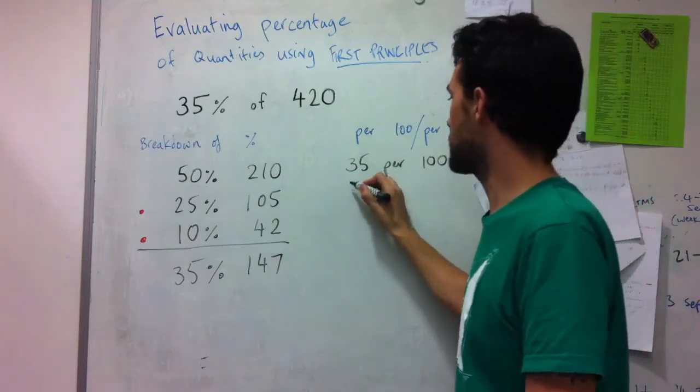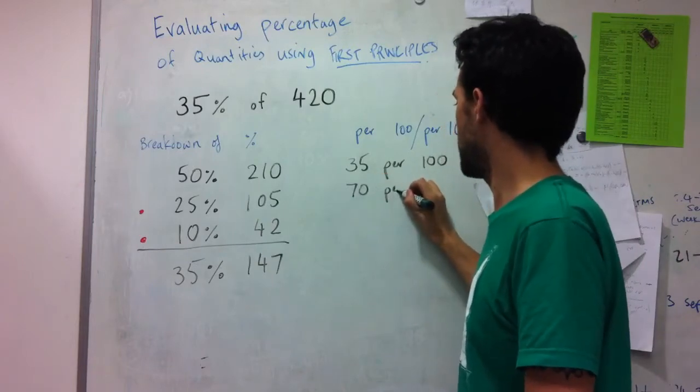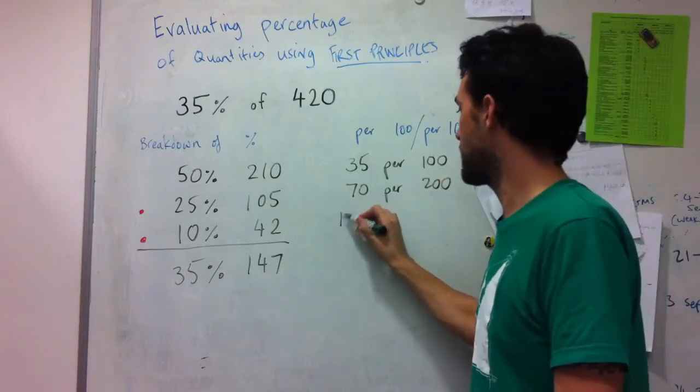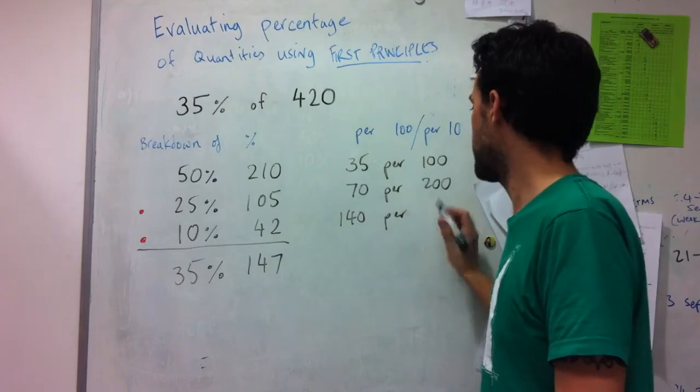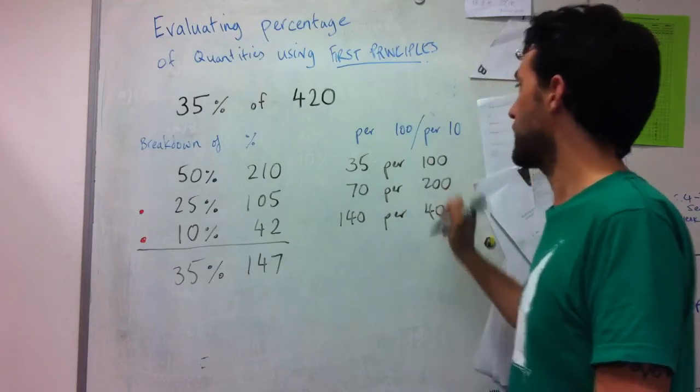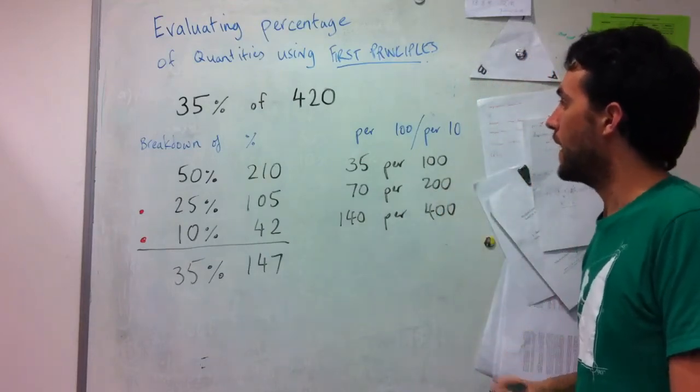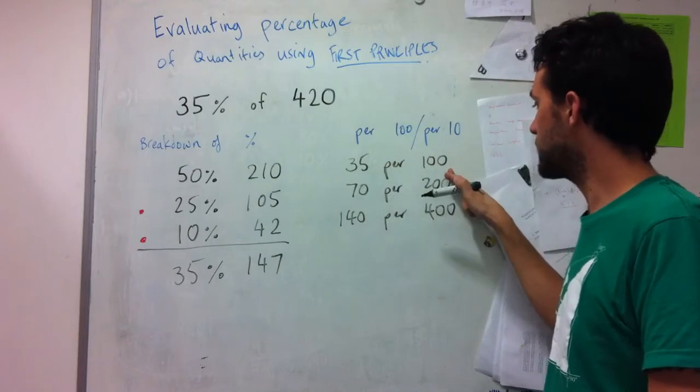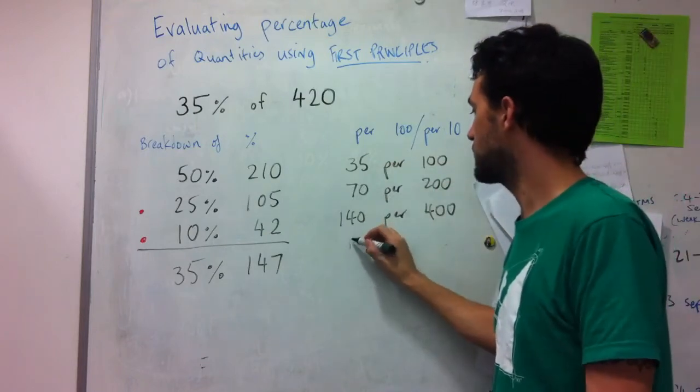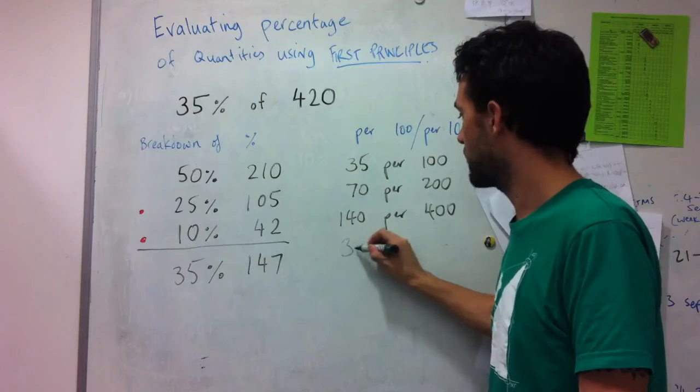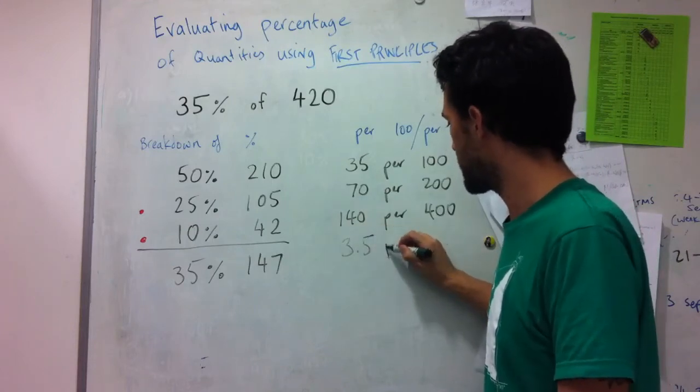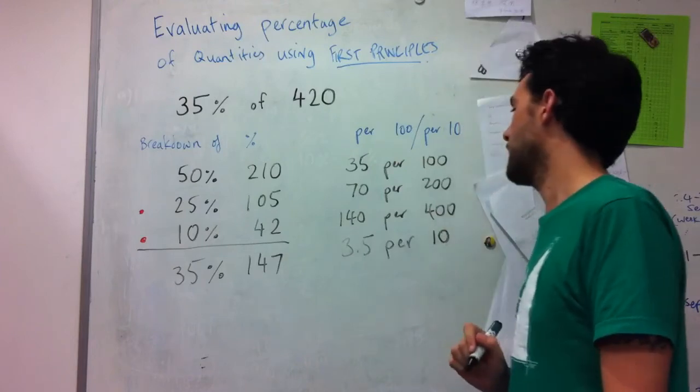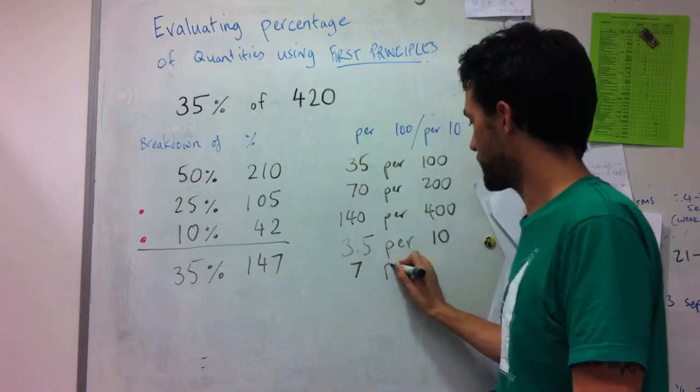Which means that I've got 70 for every 200 and then I can even double that again. So it's going to be 140 for every 400. So that gives me my 400 part. And then I can also think this 20 as made up of 10s, and since it's 35 per 100 that means it must be 3.5 per 10 or 7 per 20.